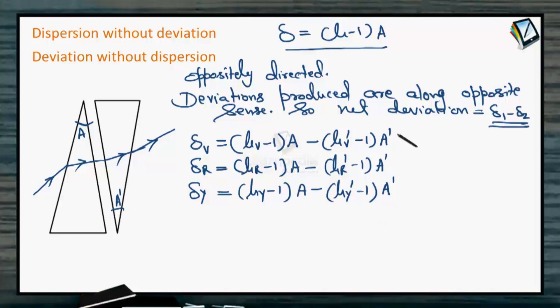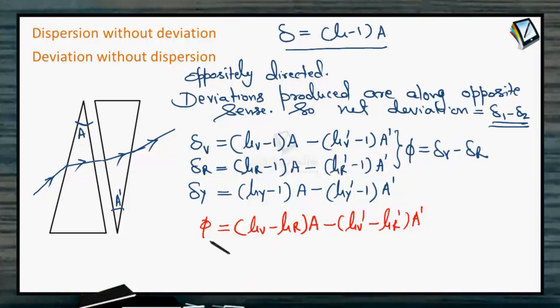So here, net angular dispersion, the φ value would be δ_violet minus δ_red, the angle between the violet and the red color. The value of φ would be δ_violet minus δ_red. You can see corresponding terms will get subtracted and you can rearrange the result like this. If you subtract δ_violet minus δ_red, what you will get is this: φ. So this is angular dispersion produced by this combination of prisms.